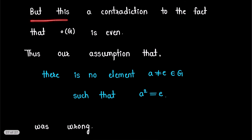This is a contradiction to the fact that the order of G is even, which is given to us in the question.